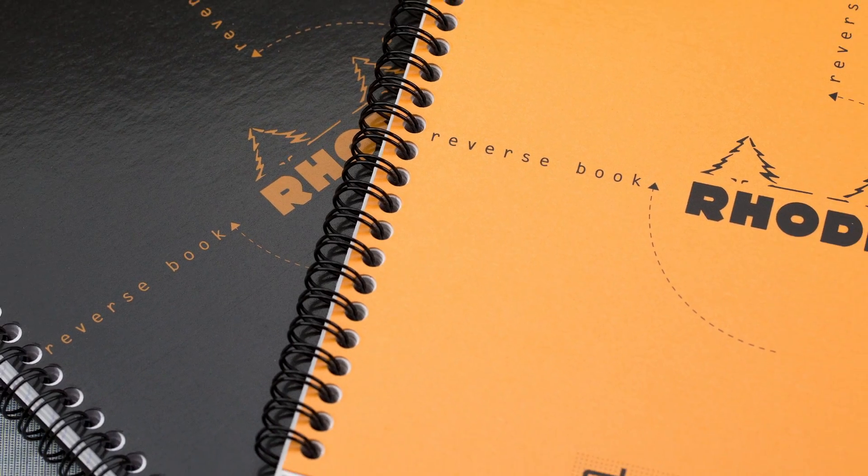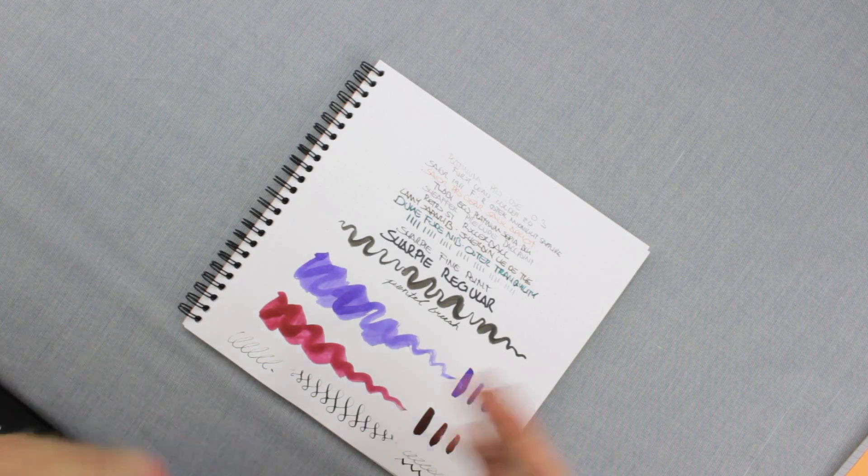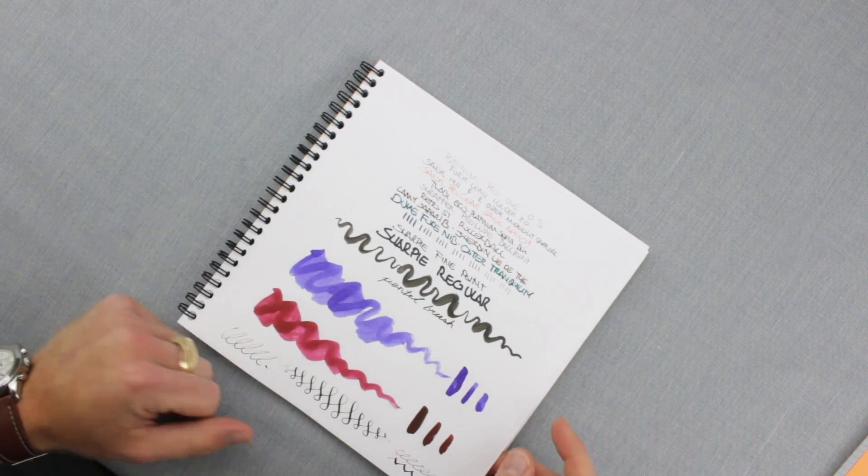It only comes in graph and dot varieties, which makes sense because if it was a lined version, you'd have a hard time flipping it every which way.